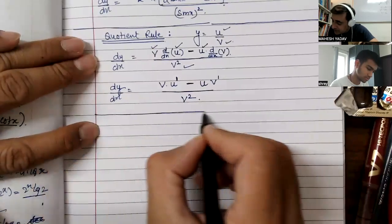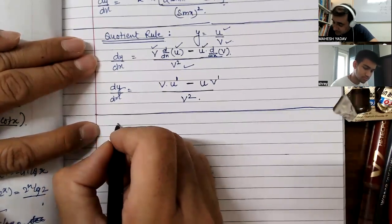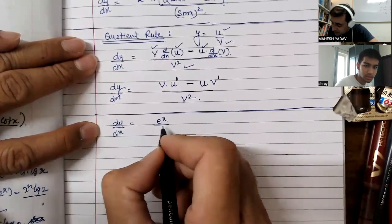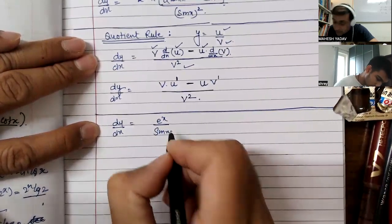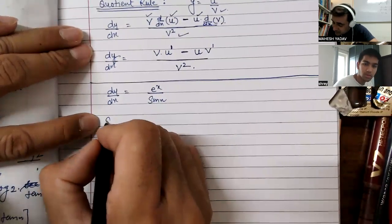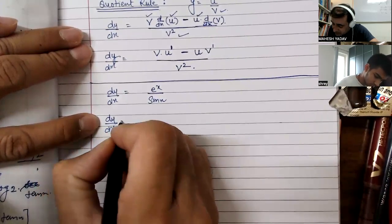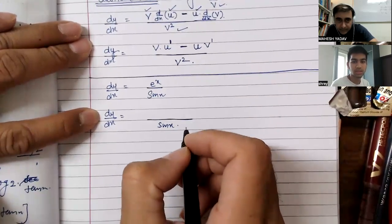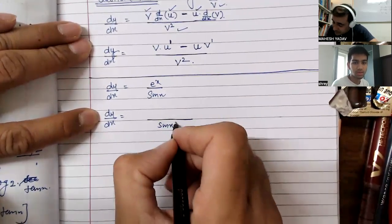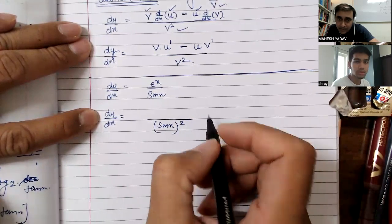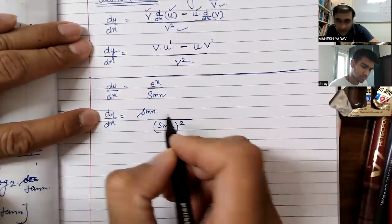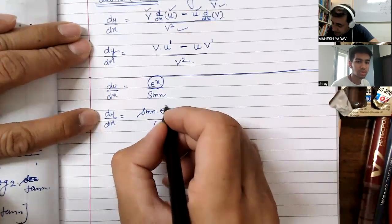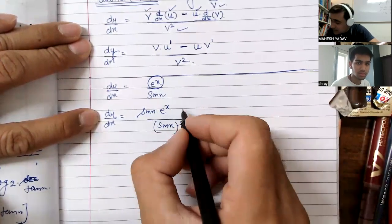Now there is a question: dy by dx is equal to e to the power x upon sin x. Applying the quotient rule: dy/dx equals denominator whole square — sin x whole square — sin x as it is, multiplied by derivative of e^x which is e^x.